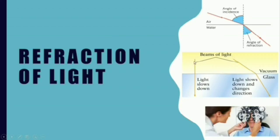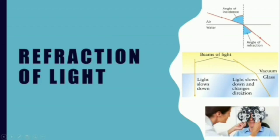Refraction occurs for two reasons: the speed of light changes, and light enters the new material at an angle to the normal. There are two cases: a beam parallel to the normal passes straight through without deviation, but when light enters a denser medium like glass from vacuum it slows down, and if the incident ray makes an angle with the normal it bends towards the normal, so the angle of refraction is less.